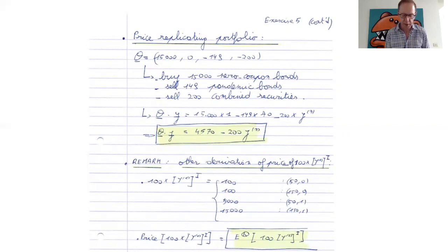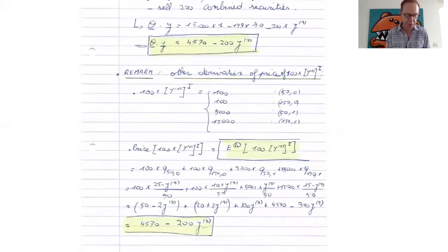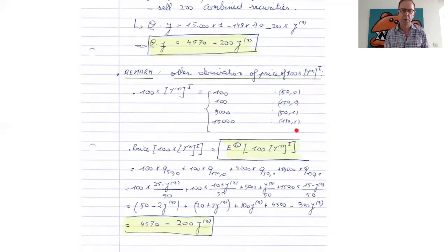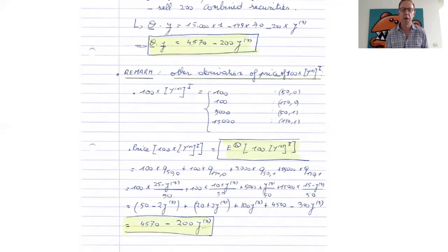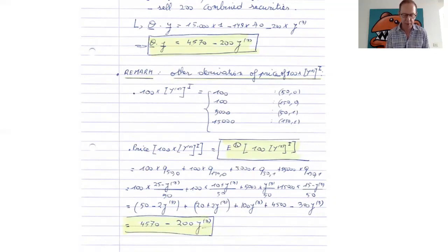There is also a remark that tells us we can derive the price of the exotic payoff in another way. We look at the value of the payoff in each possible state of the world. The price of the exotic payoff is the expectation under Q of this payoff. We can calculate this expectation because we know the probabilities q(50,0), q(150,0), q(51,1), and q(151,1), with corresponding outcomes 100, 100, 5000, 15000. Working this out gives the same price as before, confirming both approaches agree.